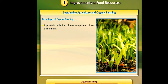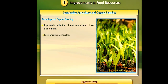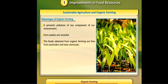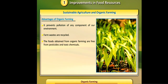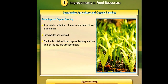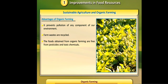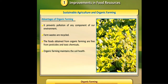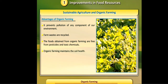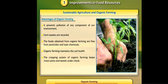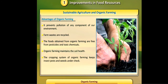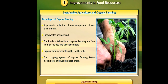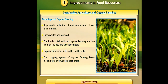Advantages of organic farming: it prevents pollution of any component of our environment; farm wastes are recycled; the foods obtained from organic farming are free from pesticides and toxic chemicals; organic farming maintains soil health; and the cropping system keeps insect pests and weeds under check.